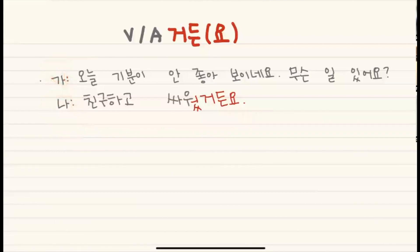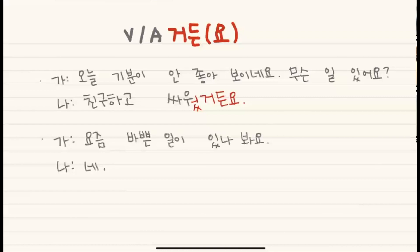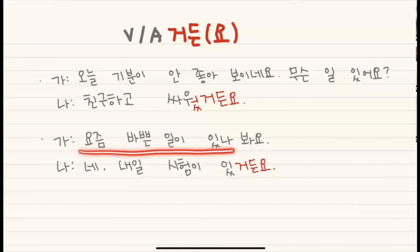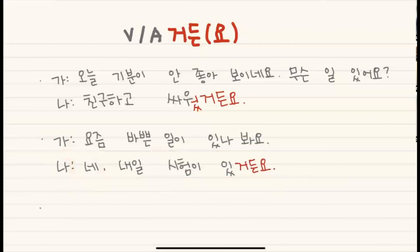가 is talking again: 요즘 바쁜 일이 있나봐요. 네, 내일 시험이 있거든요. So 가 guesses that 나 has something busy going on, and 나 replies: yes, I have a test tomorrow. Since 가 cannot know this, 나 is explaining it with 거든요.